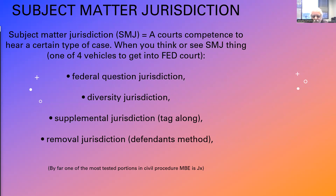For subject matter jurisdiction, we're specifically talking about cases that end up in federal courts. There are four ways to get into federal court. The one tested most is federal question jurisdiction. Anything based on federal law, statutes, treaties, or the Constitution is a federal question, and federal courts can always hear those regardless of the diversity or residency of the parties. Diversity jurisdiction involves state law questions where the parties must reside in different states — otherwise you don't have diversity.